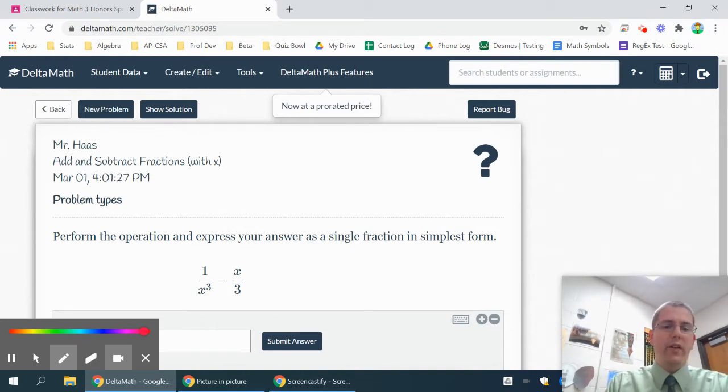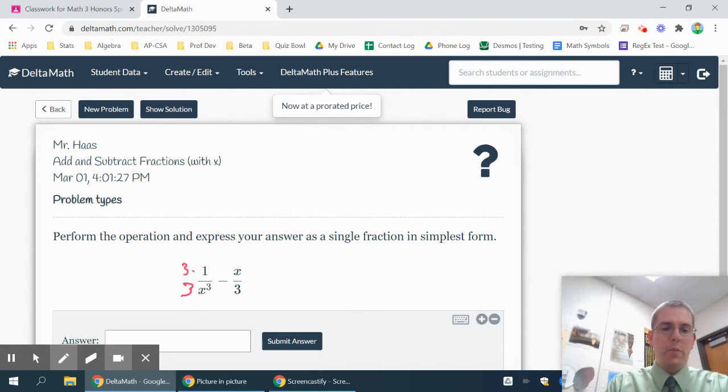So I have an x to the third and I have a three. Since this has a three, this denominator will need a three. And to add a three to the denominator, I'm basically multiplying by three. So I have to multiply the numerator by three as well.